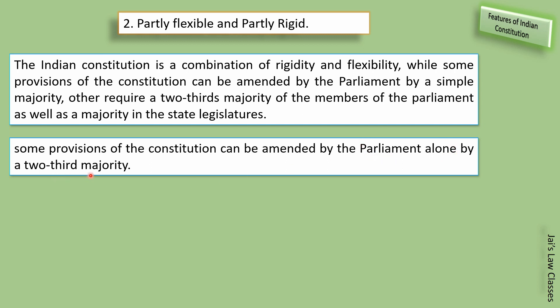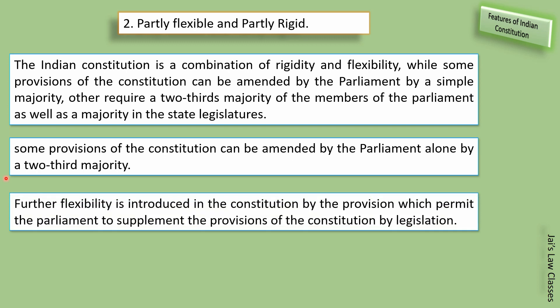Our constitution has both flexible and rigid elements. Further flexibility is introduced by provisions which permit Parliament to supplement constitutional provisions by legislation — meaning elected MPs and MLAs can make laws. So now we understand why the constitution is called partly flexible and partly rigid.